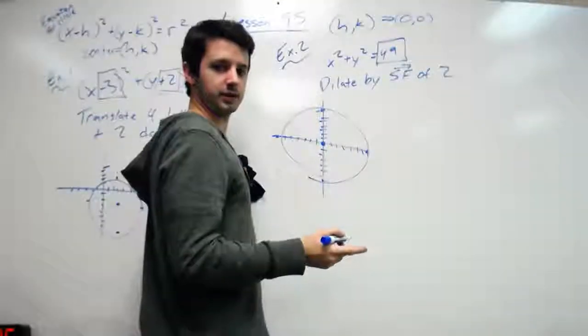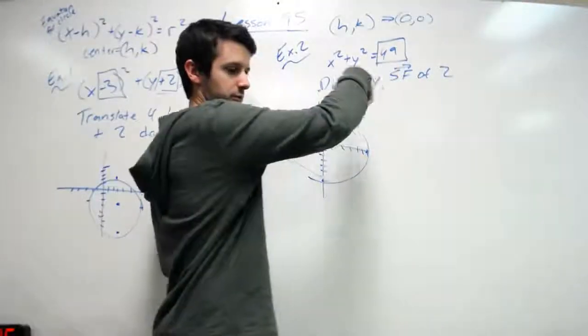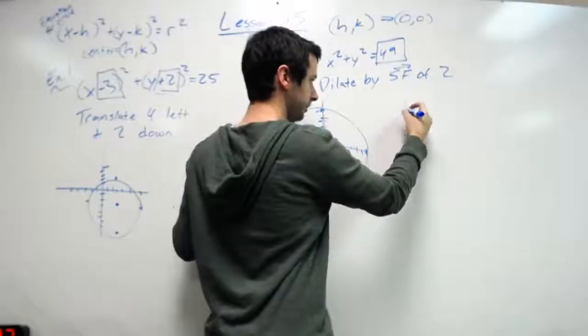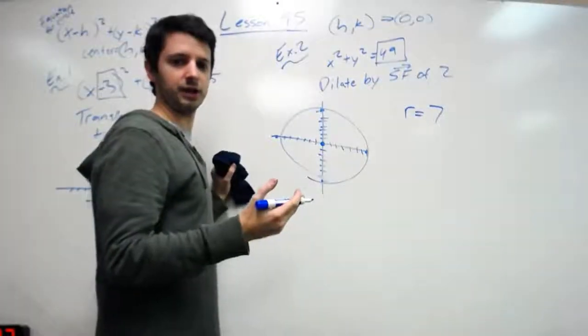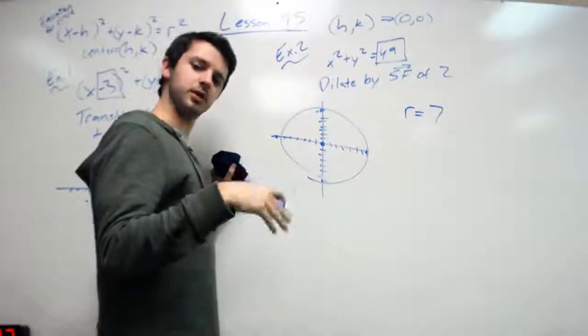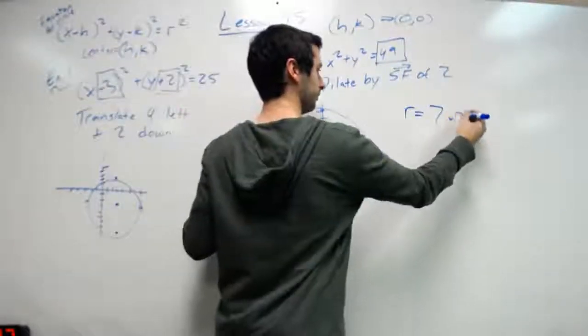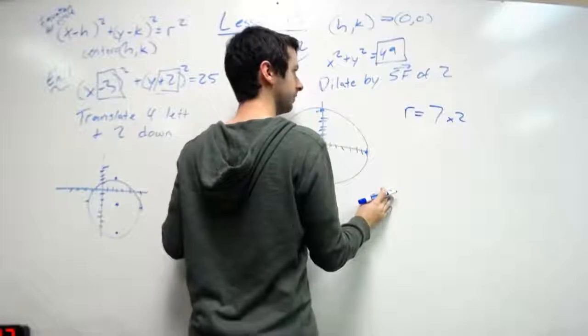So my radius here is not 49. Once again, it's the square root of 49. So my radius would then be seven. So literally all I do is I scale factor that by two, meaning I multiply it by two.